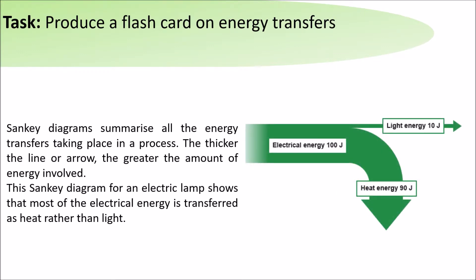Sankey diagrams summarise all the energy transfers taking place in a process. The thicker the line or the arrow, the greater the amount of energy involved. This Sankey diagram for an electric lamp shows that most of the electrical energy is transferred to heat rather than light.